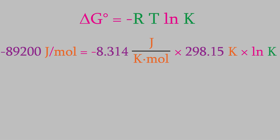We divide the Gibbs free energy by negative R times T, which gives us 36.0. When we solve for K, we find out that the equilibrium constant is 4.25 times 10 to the 15th power.